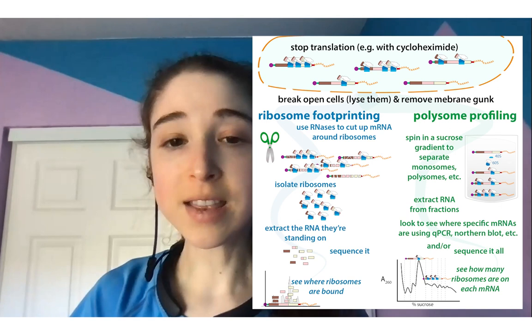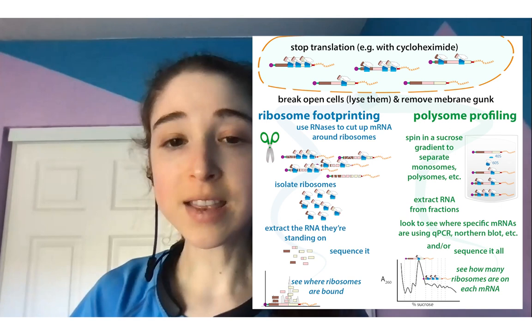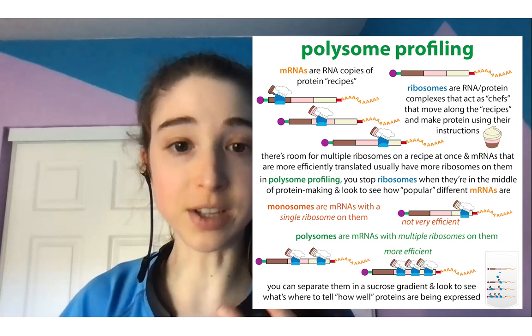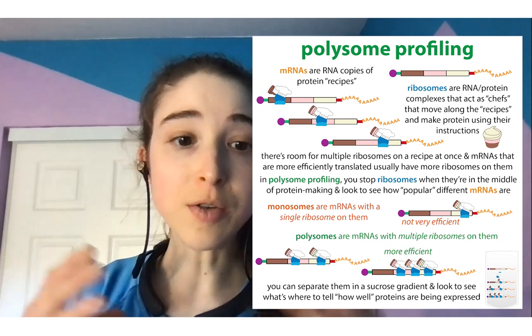This is analogous to something called polysome profiling, where we look to see how many ribosomes — the protein-making machinery — are on a messenger RNA, which is the instruction for making a protein. You can also think about another way to see if a ride was more popular: if the park had more copies of it.